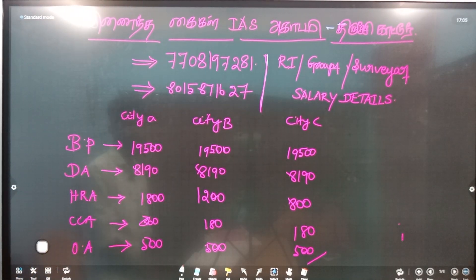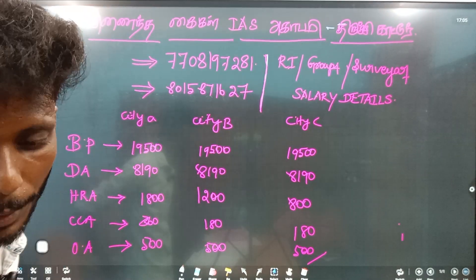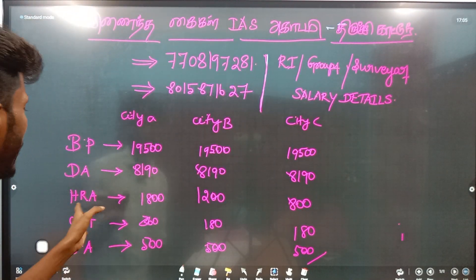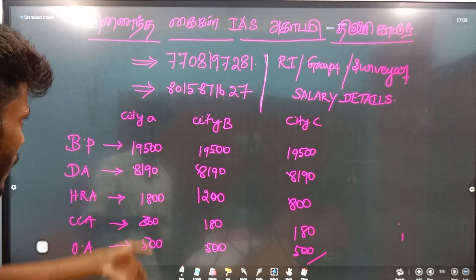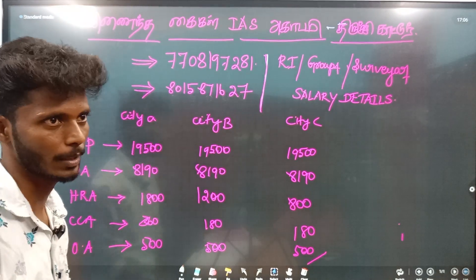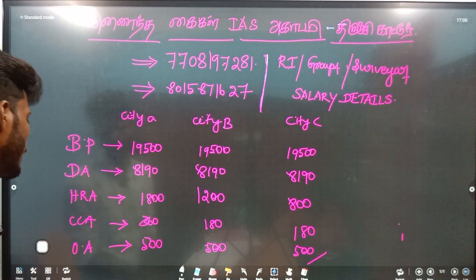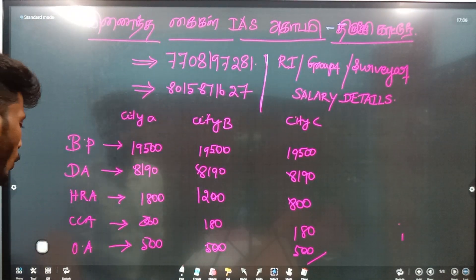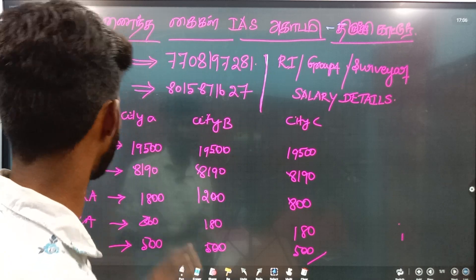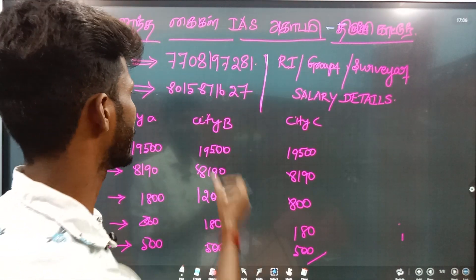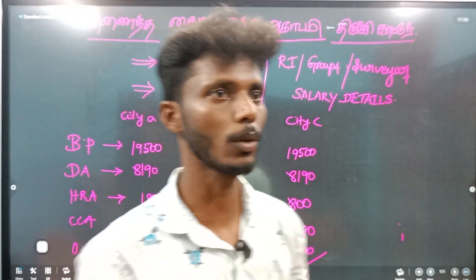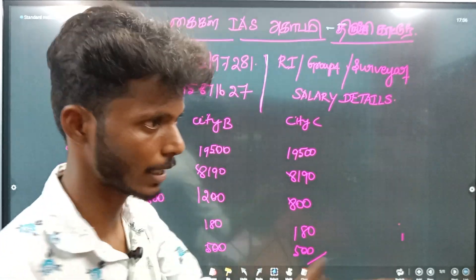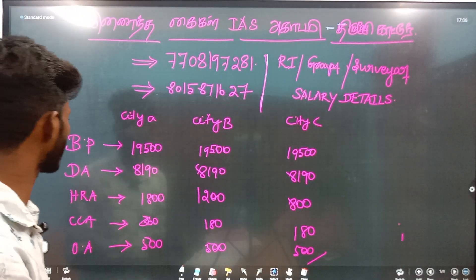Then there is TA, which is ₹10,000. TA is the travel allowance, which is ₹10,000. House rent allowance is ₹10,000. The city allowance is ₹10,000. The CTA is ₹10,000. Other allowance is ₹500. This brings us to City B.